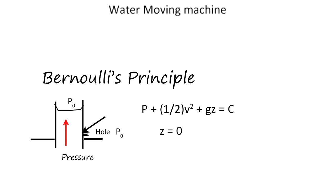So what happens? This is Bernoulli's equation. Water moves up because there's no hole. Once you make a hole, what happens? This pressure - atmospheric pressure.